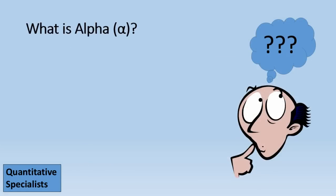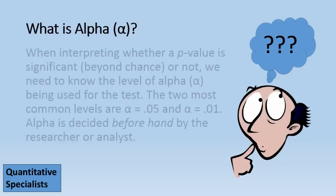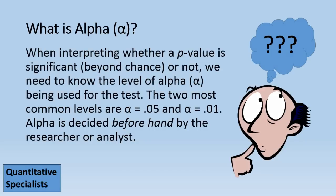Now to formalize this, we want to look at what is known as alpha. And when we interpret whether a p-value is significant, that is beyond chance, or not, we need to know the level of alpha being used for the test.